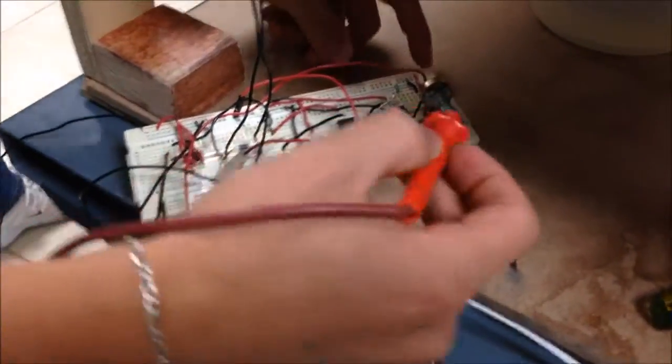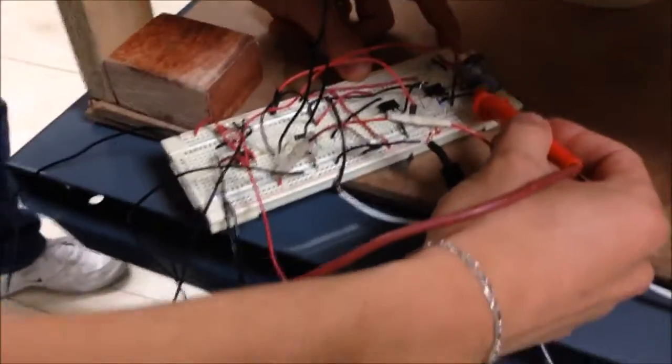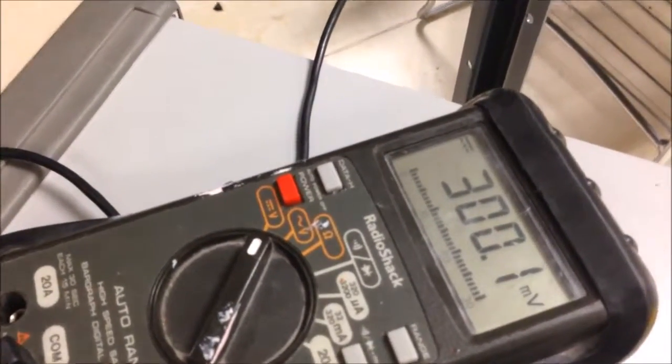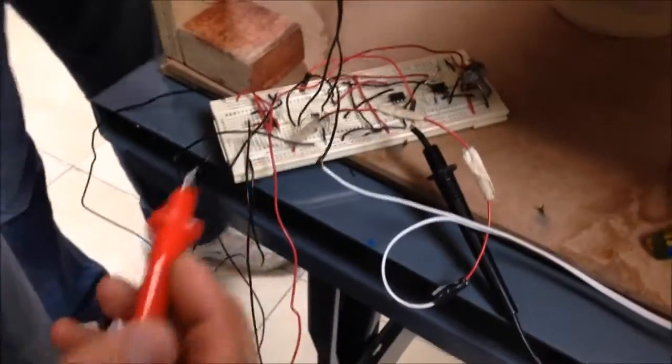Here we will check the reference of the potentiometer with a multimeter. And we can see that it is on 30 degrees, which is equal to 300 millivolts.